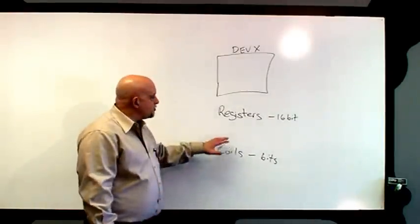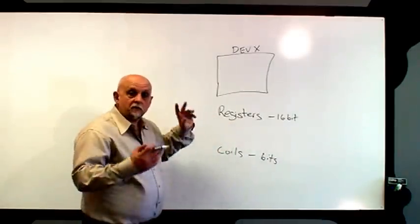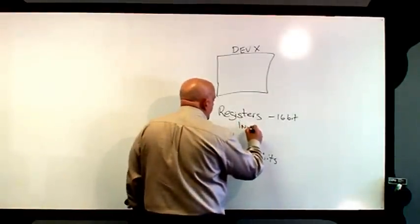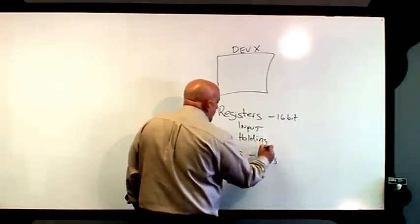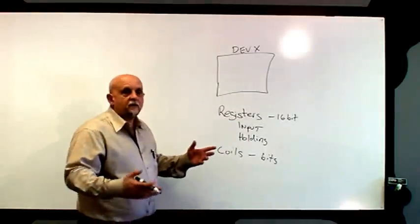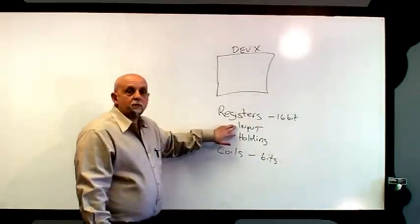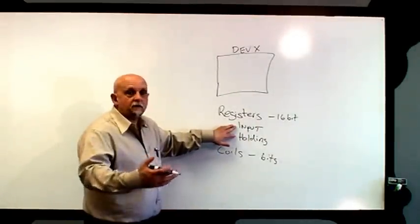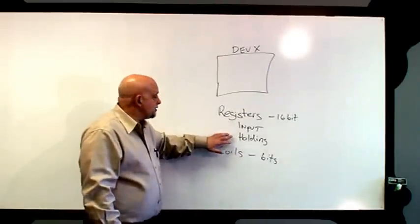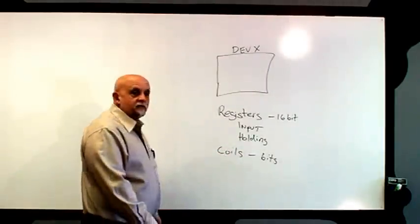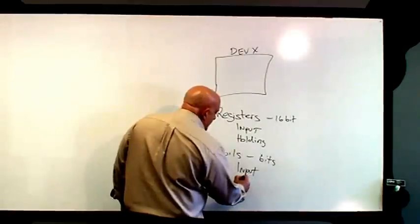The manufacturer has the choice of deciding what kind of registers they are, and there are basically two kinds: input and holding. Input registers are places to hold data coming in from the field. Holding registers, as the name says, hold data being used in the logic process. You have the same thing with coils — you have input coils and status coils.